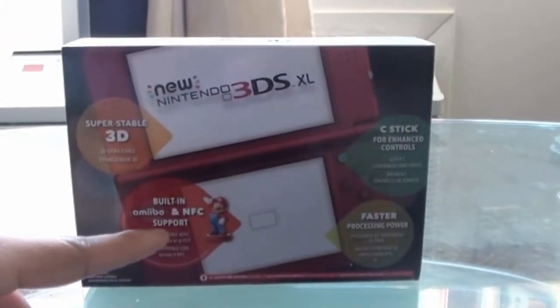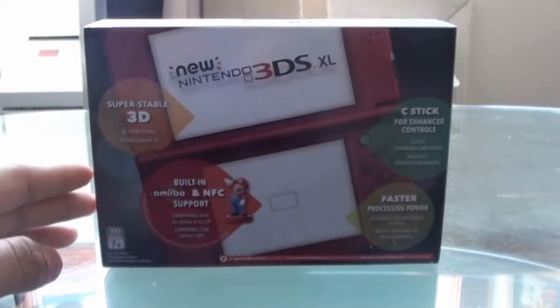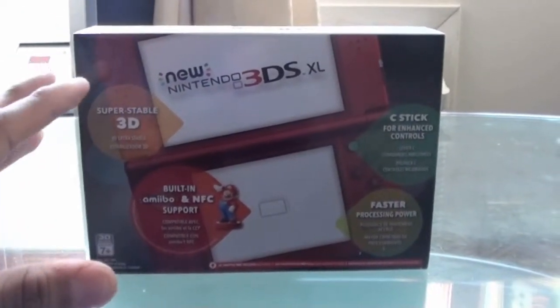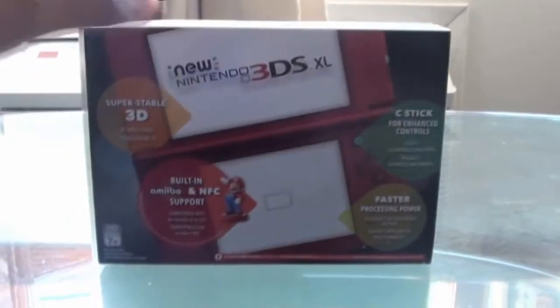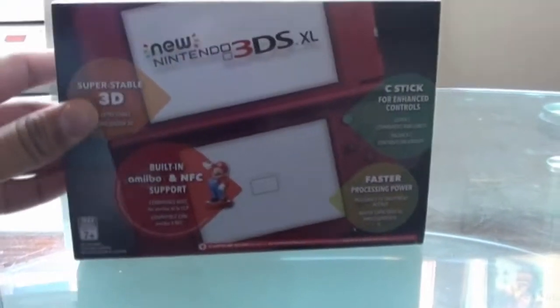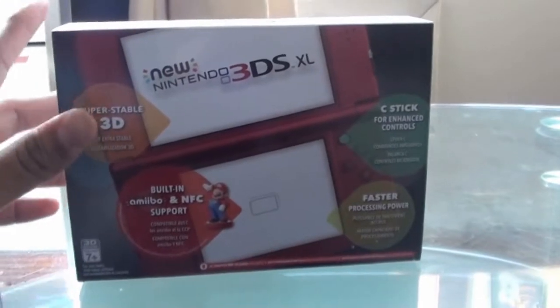Of course this comes with built-in Amiibo and NFC support, as now with the Amiibos that just came out for Super Smash Bros. So now with the Wii U, you can just put it on the gamepad and there you go. But with the 3DS, you really can't do it yet.